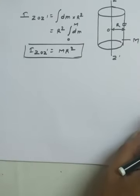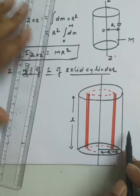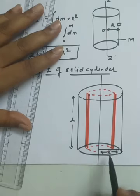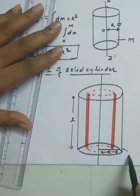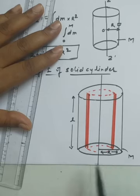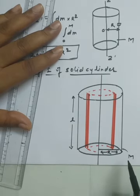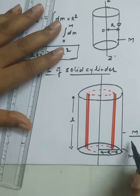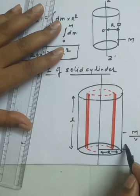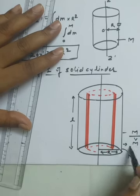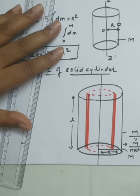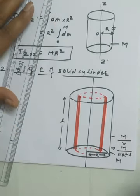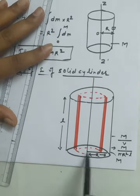Now for the solid cylinder, we imagine a cylinder of uniform mass density. The radius of the cylinder is R, and the mass of the cylinder is capital M. Since it's a solid body, we consider its volume. The mass per unit volume is rho = M divided by (pi R² times l), where l is the length of the cylinder. This is our general density formula.